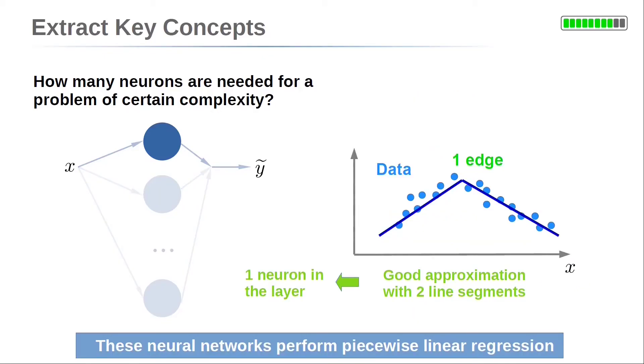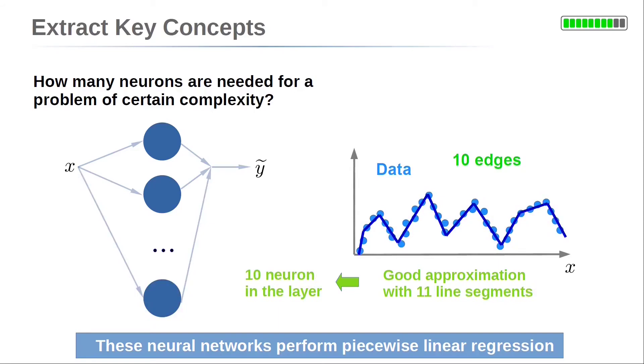These neural networks perform a so-called piecewise linear regression. That means the neural network approximates functions with line segments. The number of line segments is determined by the number of neurons. So if you expect your target function to be monotonic, you might not need a lot of neurons. But if you want to approximate an oscillating function, like a sine or a cosine, you will need a lot more neurons.